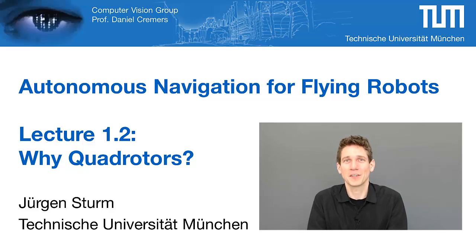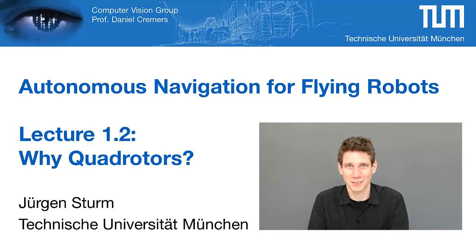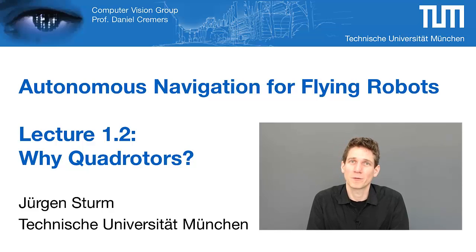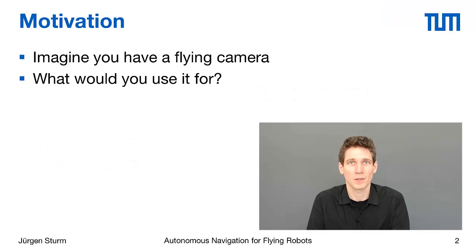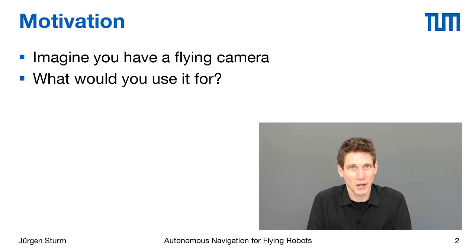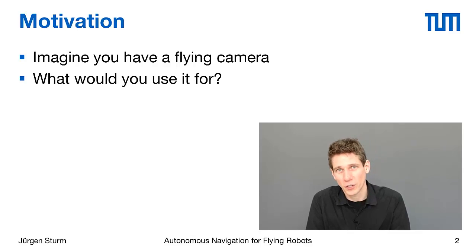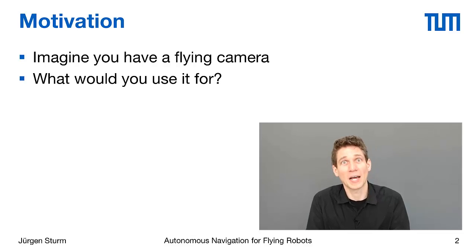Hello and welcome back everybody to the second part of the first lecture on autonomous navigation for flying robots. In this video I will briefly illustrate a few of the use cases of quadrotors and with that motivate why we believe that quadrotors will become really relevant commercially and scientifically in the near future. Before we start with the more technical applications, let me ask you to think personally what you would like to use such a quadrotor for — for the moment just think of it as an autonomously flying camera.